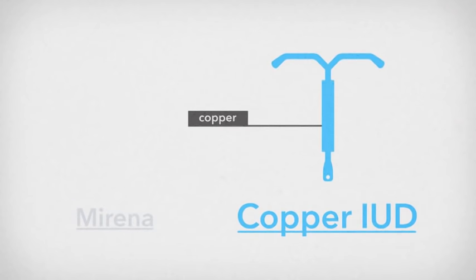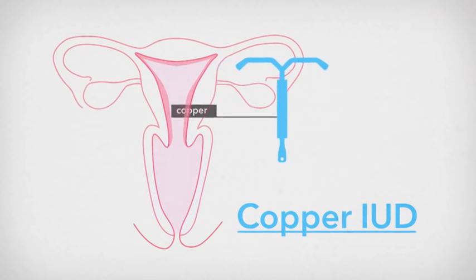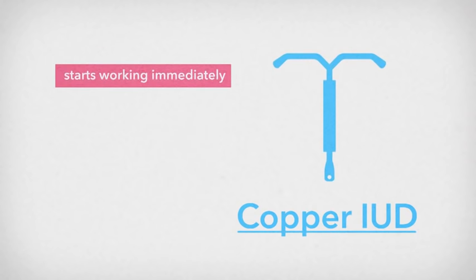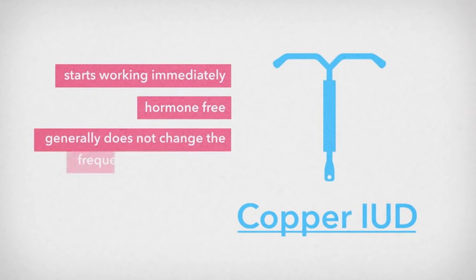The Copper IUD works mainly by stopping the sperm from fertilizing the egg. It starts working as soon as it has been fitted. The Copper IUD is hormone free and generally will not change the regularity of your periods.